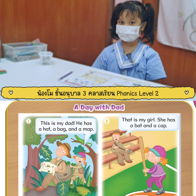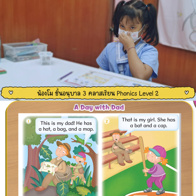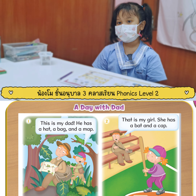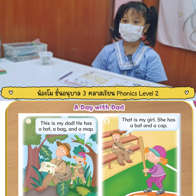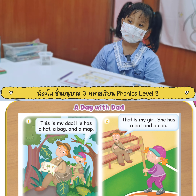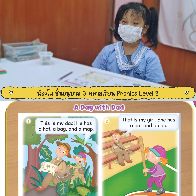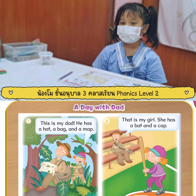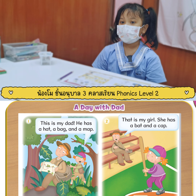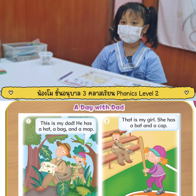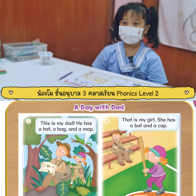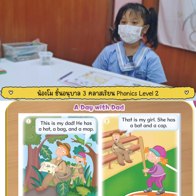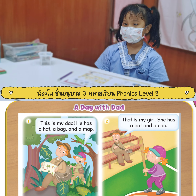Okay, let's go. This is my dad. Very good. He has a hat. Yes. A bag. An map. Very good.